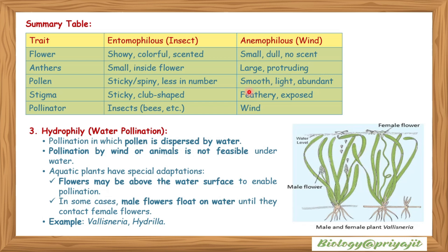In entomophilous flowers, pollen is sticky or spiny and fewer in number; in anemophilous flowers, pollen is smooth, light, and abundant. Stigmas in entomophilous flowers are sticky and club-shaped; in anemophilous flowers, stigmas are feathery and exposed. The pollinator in entomophilous flowers is insects; in anemophilous flowers, it is wind.